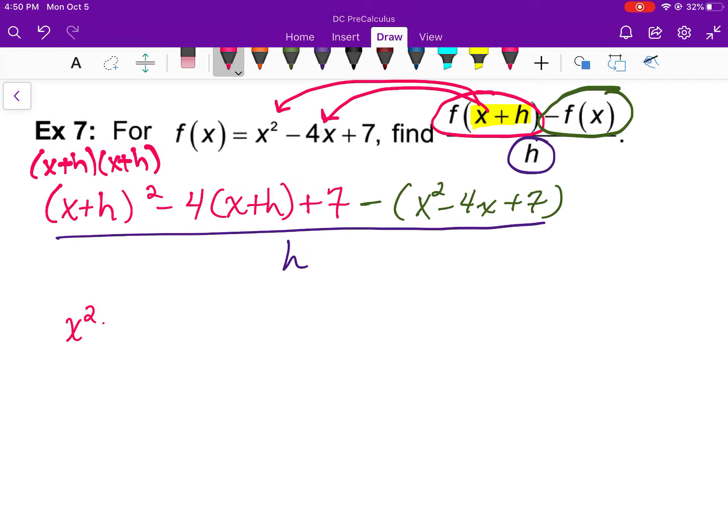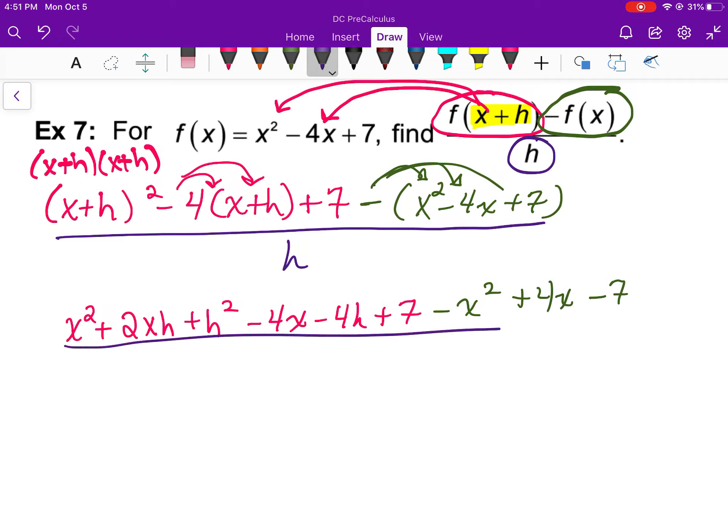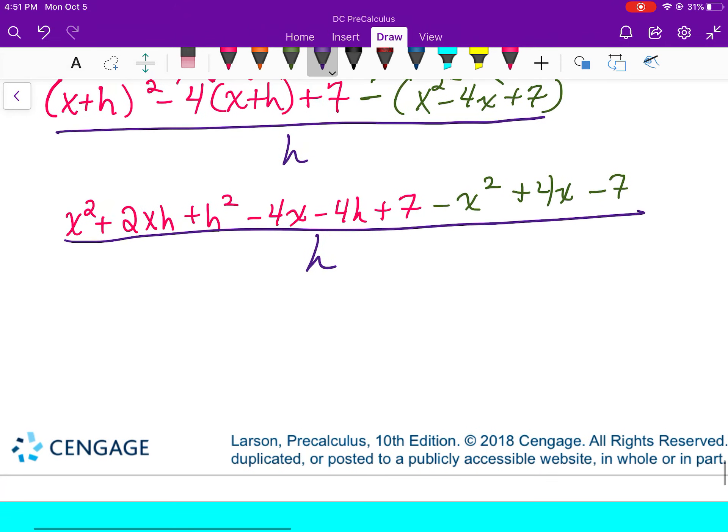So it'll be x squared plus 2xh plus h squared. Then I'll distribute here. And then in green, I'll have minus x squared plus 4x minus 7, and then dividing that by h. Those add to 0. These add to 0. These add to 0.